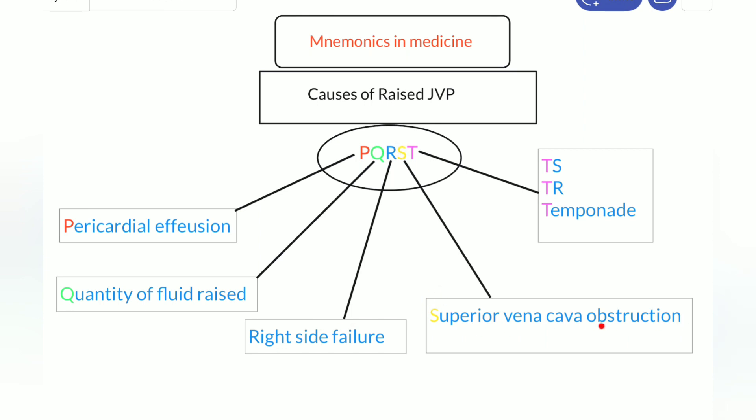S, superior vena cava obstruction. Patients with SVC lung cancer usually we face this complaint, we find raised JVP, superior vena cava obstruction.